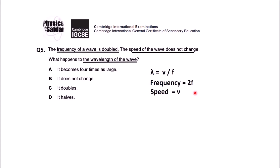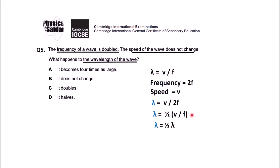The new wavelength = v ÷ (2f). Simplifying, this equals one-half of (v/f), and since v/f is the original wavelength (λ), the new wavelength is λ/2 — half of the previous wavelength. Checking the options: four times larger — no; unchanged — no; doubled — no; it's half — correct. So the answer is the wavelength is halved.